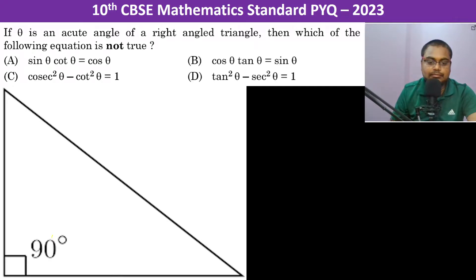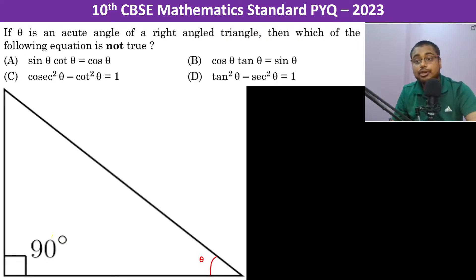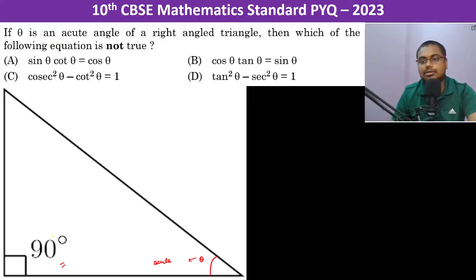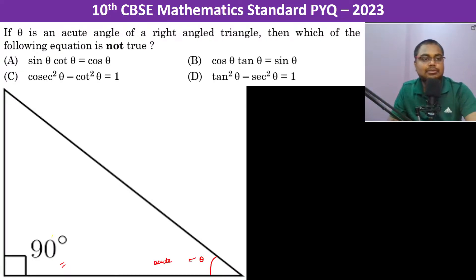In a right angle triangle with angle theta, which of the following equations is not true? Theta is acute — obviously, because one angle is already 90 degrees, the other two angles must be acute, i.e., less than 90 degrees.